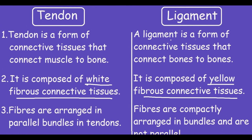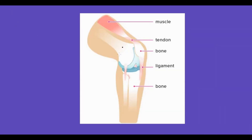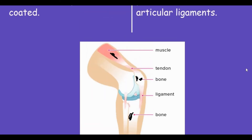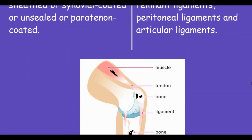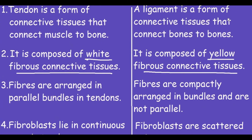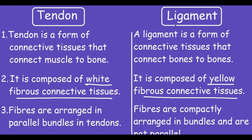This simple diagram shows how tendons connect muscles to bones and how ligaments connect bones to bones. These were the differences between tendons and ligaments. Thank you.